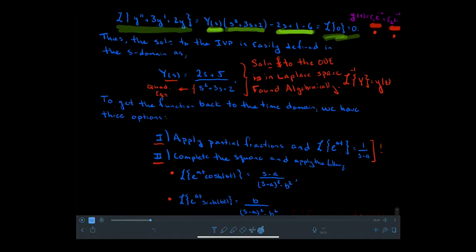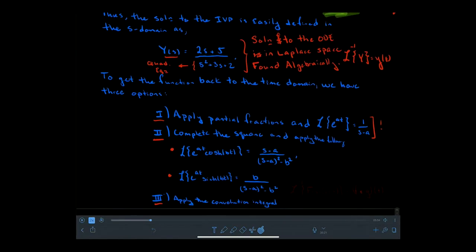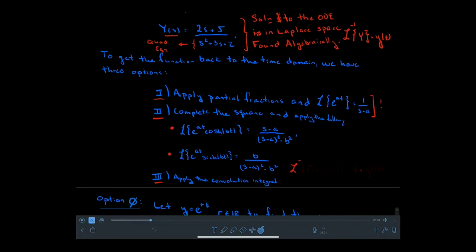Or, lastly, we can apply the convolution integral. The convolution integral states that the inverse transform of capital F of S times capital G of S equals the convolution of little f and little g — so we just transform them right back. That convolution integral is an integral that allows products to transform under the Laplace transform. It's an advanced technique, but I'll record it here as well.